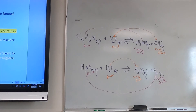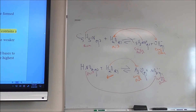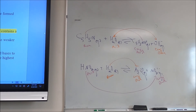When we have a Bronsted-Lowry reaction that produces a new conjugate acid and a new conjugate base, the question becomes why did the reaction happen at all? It has to do with the strength of the acids and bases. In an acid-base reaction at equilibrium, the concentrations of the weaker acid and weaker base should be larger than the stronger acid and stronger base — the weak side is favored.